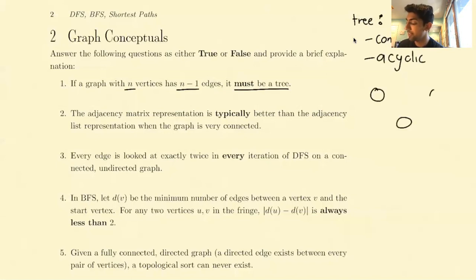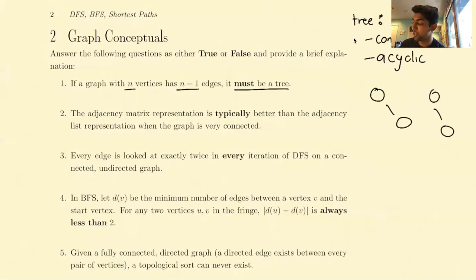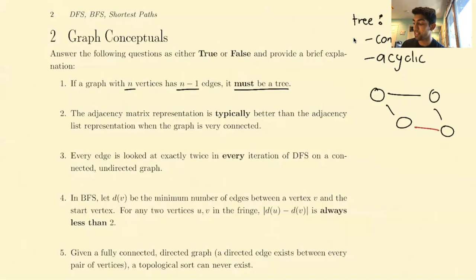If we have any graph, this is a tree, right? This is also a tree. But when we add in this red edge, we see it's not a tree anymore because it's not acyclic. And if we get rid of these two edges, we see it's not a tree because it's not connected. So a tree is connected and acyclic.